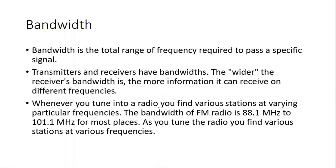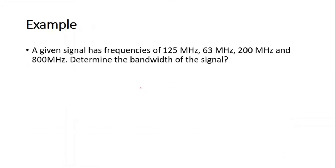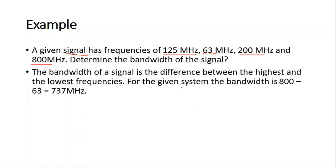When you tune a radio to find different stations, you are changing the frequencies. The bandwidth of FM radios ranges from 88.1 MHz to 101 MHz — a huge range of frequencies allowing many FM stations to broadcast simultaneously. For example, assume a signal has frequencies 125 MHz, 33 MHz, 200 MHz, and 800 MHz. The signal is transmitted between 800 MHz down to 63 MHz, so the bandwidth is 737 MHz.